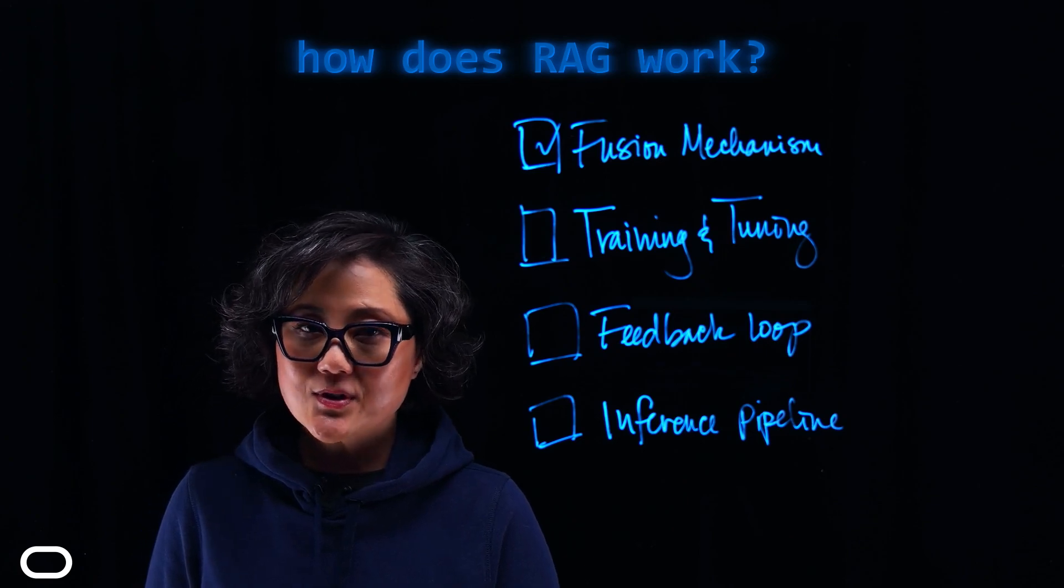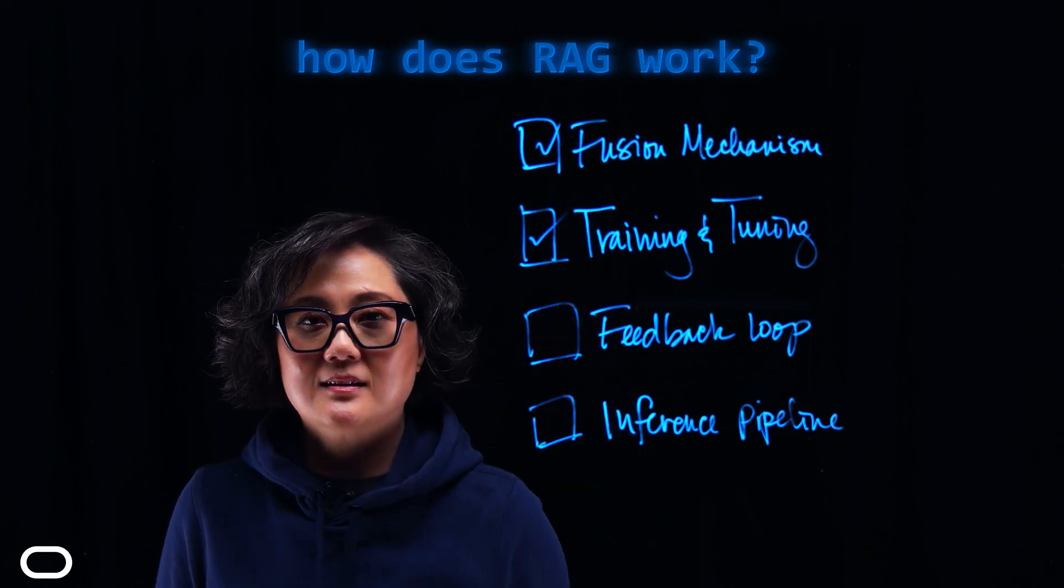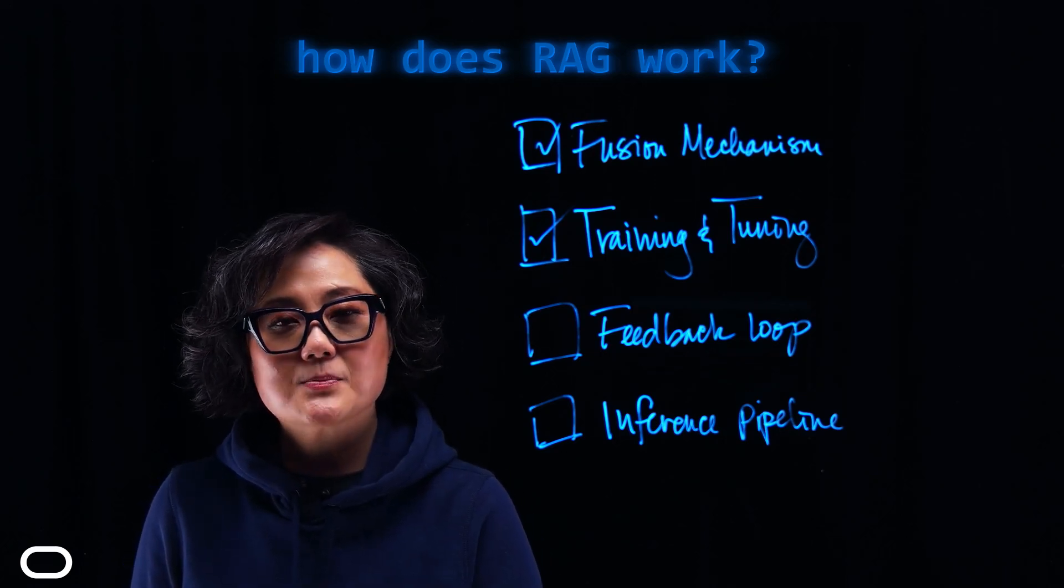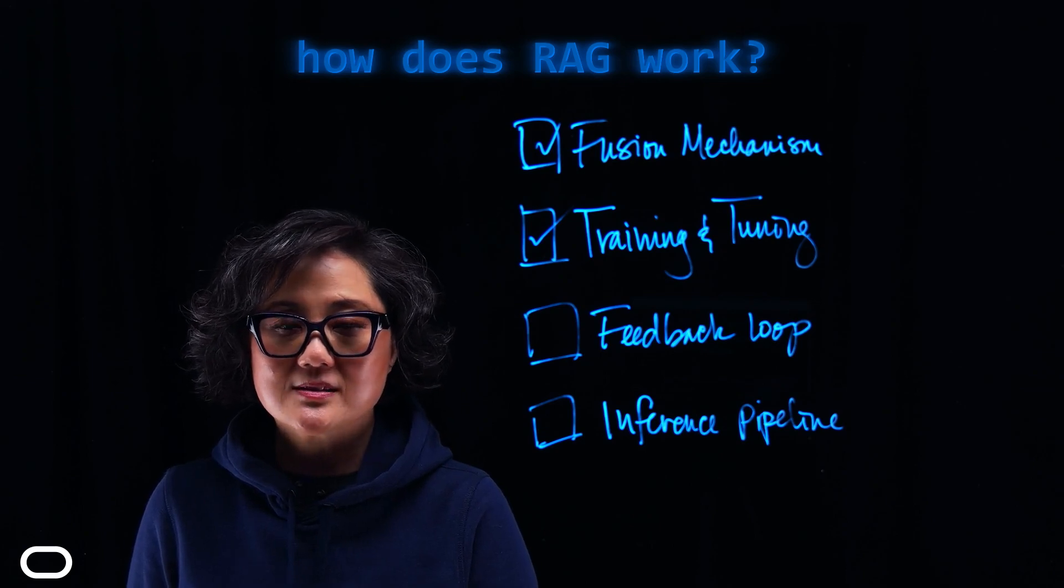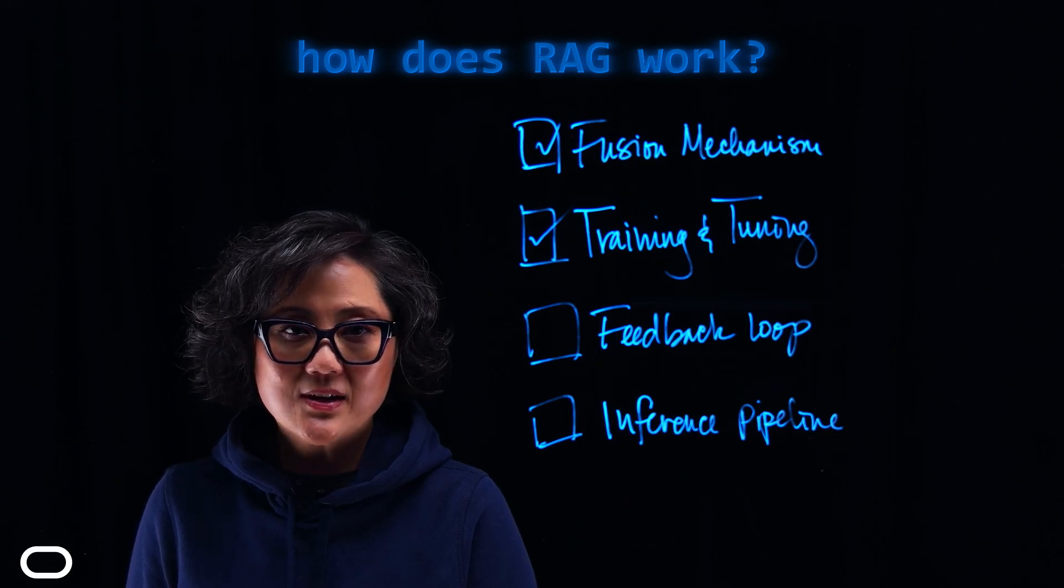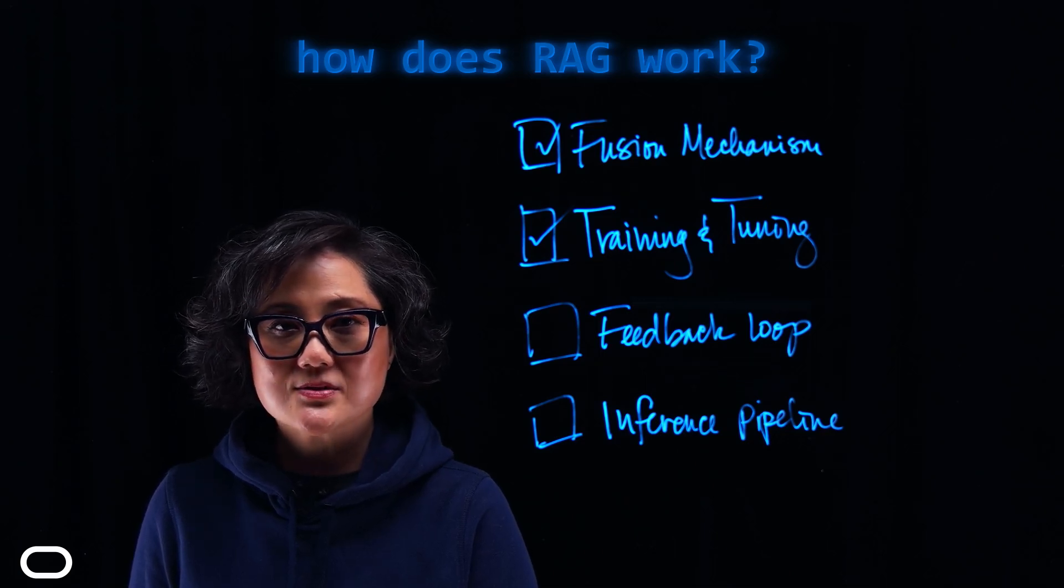Next, we have Training and Fine-Tuning. In some implementations, the Retriever and the Generator can be jointly trained to optimize the end-to-end performance of the system, aptly referred to as joint training. And this involves fine-tuning both components to work together seamlessly.